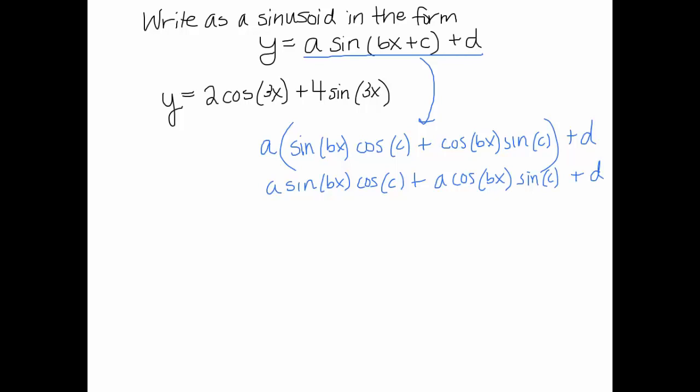So now we have to think about how are these supposed to match up? How is 2 cos 3x plus 4 sine 3x supposed to equal that long thing? Well, let's see if we can start matching up some pieces. Notice this plus d. That doesn't seem to show up on the left side here. I'm going to say that the d is 0 in this case. So let's not worry about the d.